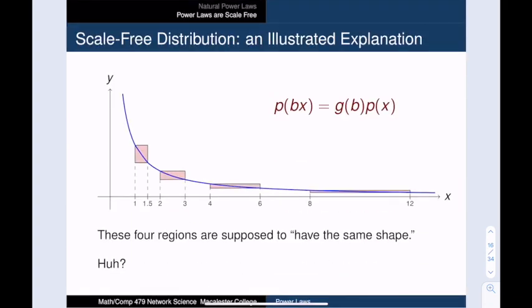The curve between 1 and 1.5 is supposed to be self-similar to the curve between 2 and 3. That corresponds to taking b = 2. But they are clearly different. The first is much steeper than the second. And the curve between 1 and 1.5 is also supposed to be similar to the curve between 4 and 6, which corresponds to using b = 4. And the same goes for the curve between 8 and 12. That's just b = 8. In fact, all of these are supposed to be self-similar to one another. So, how do we make sense of this?